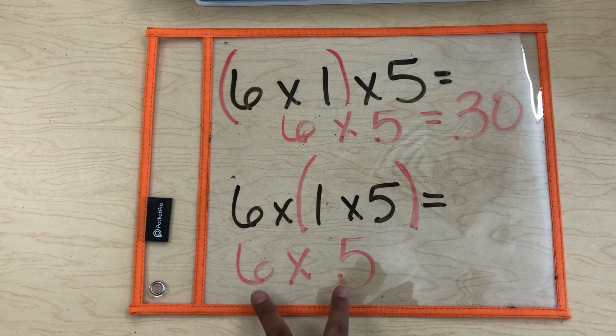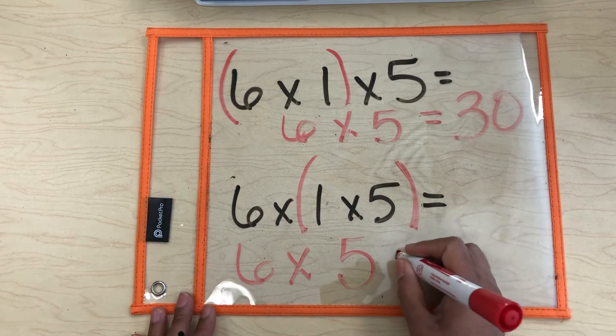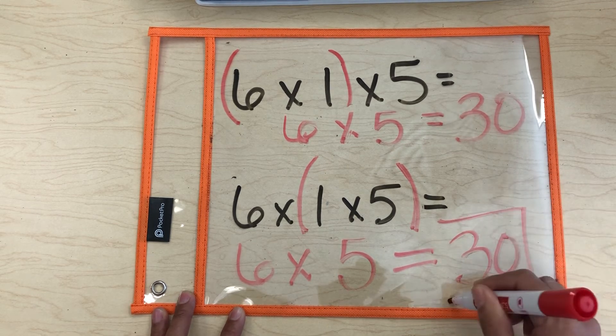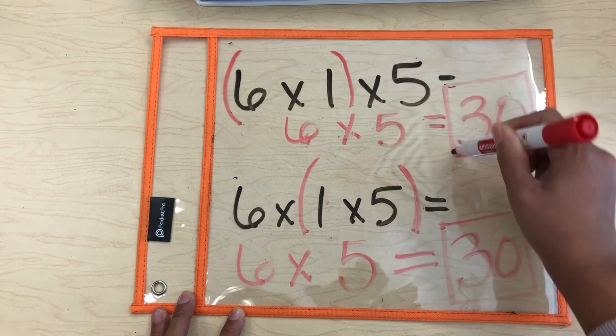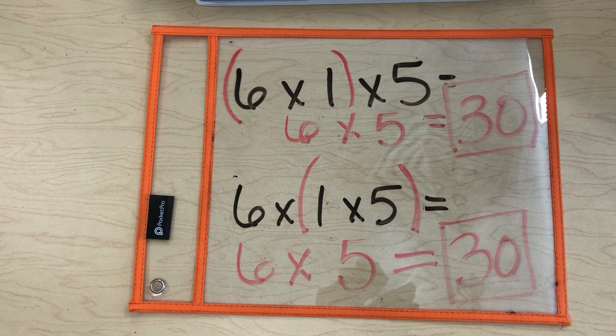Look. We already know that we have this right. 6 times 5 and 6 times 5. What is 6 times 5? 30. Awesome sauce. There we go. We have 30 on both of our products. That is how you use the associative property of multiplication.